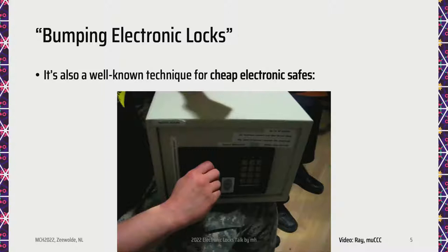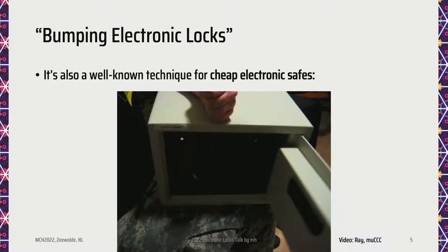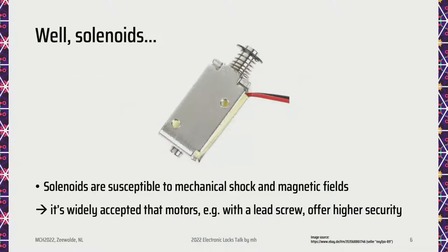Here you see Ray bumping open a safe at Munich CCC. Most people who know something about locks also know that this is because of the solenoid in these cheap safes. And they have become an anti-pattern in mechanical and electronic lock design, because they are so easy to manipulate from the outside. So people generally accept that motors are a more secure way to lock something.